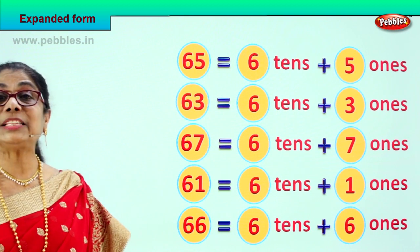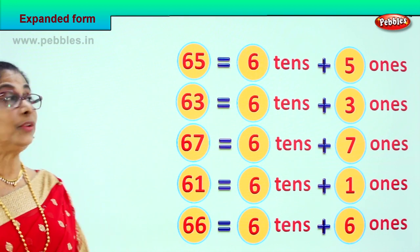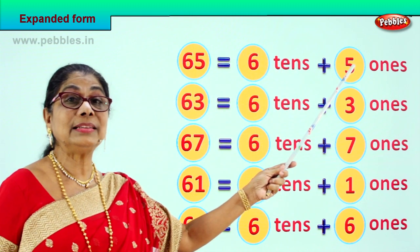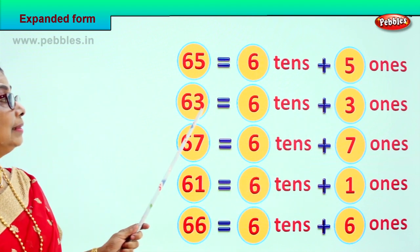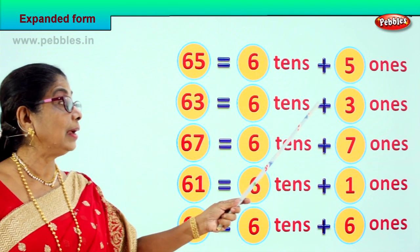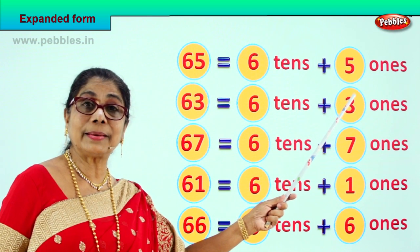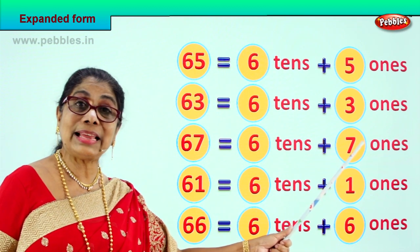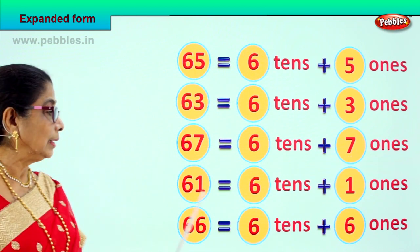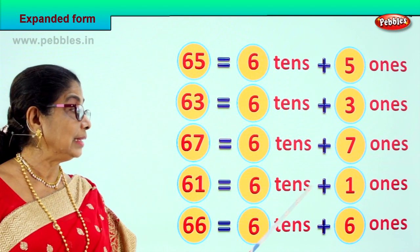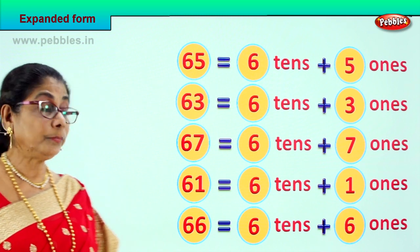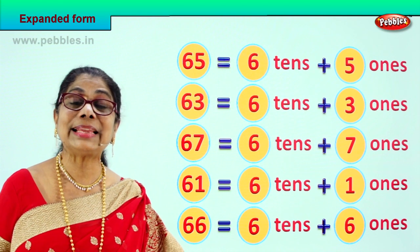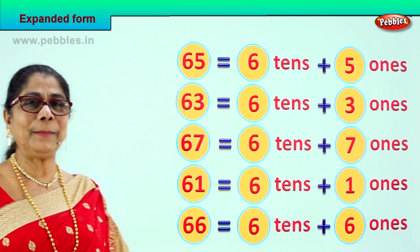Let's read together the expanded form that we have done. 65 is equal to 6 tens plus 5 ones. 63 is equal to 6 tens plus 3 ones. 67 is equal to 6 tens plus 7 ones. 61 is equal to 6 tens plus 1 one. 66 is equal to 6 tens plus 6 ones. Did you enjoy?